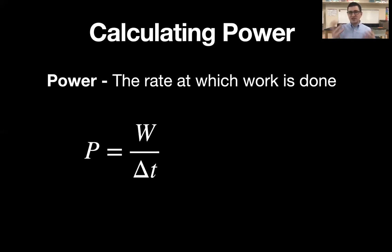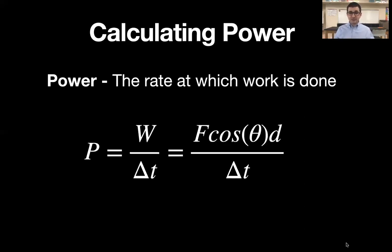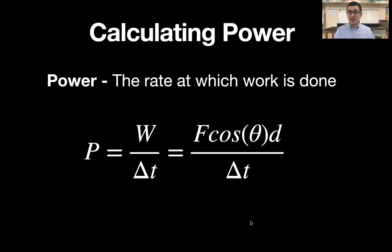There are more formulas built on that same idea. Since work is the dot product of force and displacement — force times the cosine of the angle between the force and displacement, times the displacement — we can substitute that work formula into the power equation. So if you're given force, displacement, the angle between them, and the time, you can calculate power. Note that this formula gives you average power, because it's computed over a time interval.